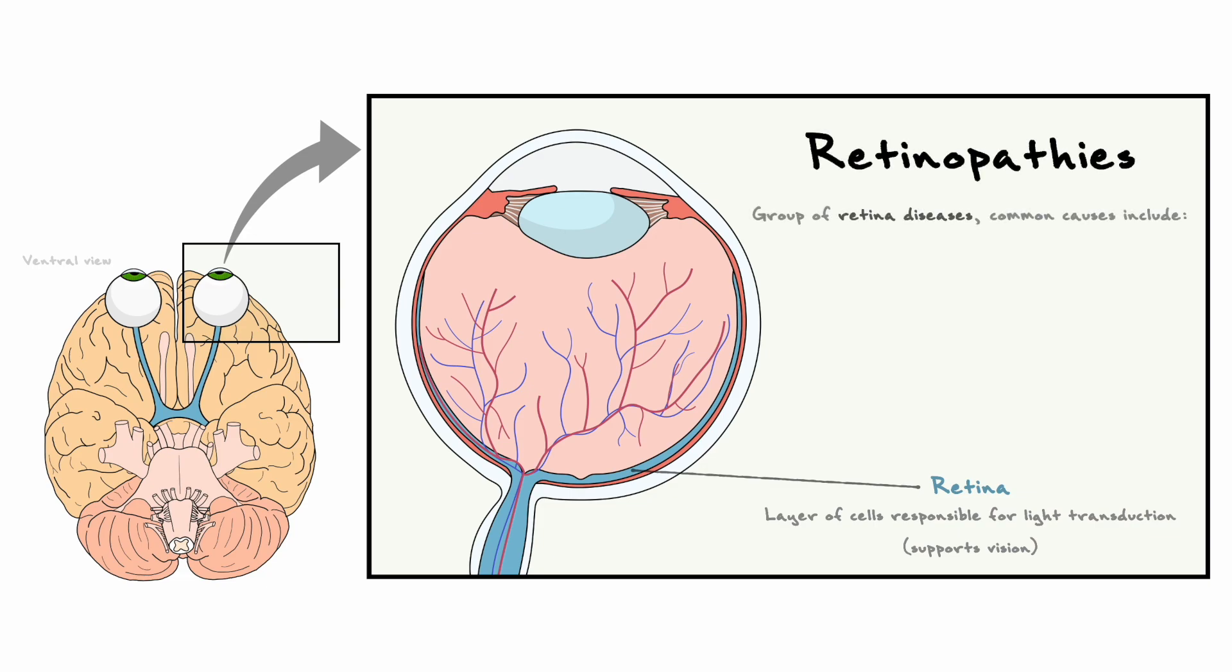When it comes to retinopathy, there are a group of diseases that affect the retina, and as you can imagine, any retinopathy causes vision impairments. Diabetes and blood hypertension are some of the leading causes of retinopathy, but in this video, we will consider one particular genetic disease that comes from the mutation of CNG channels.